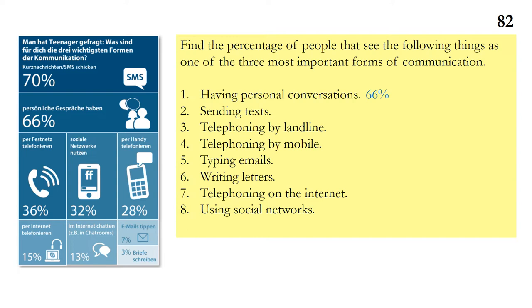66% of teenagers see personal conversations as one of the most important forms of communication. 70% see sending texts as one of the most important. 36% see telephoning by landline as important. 28% talk about phoning by mobile. 7% mention typing emails — so emails are not very popular with teenagers in Germany. 3% talk about writing letters. 15% mention calling on the internet. And 32% talk about using social networks as really important.